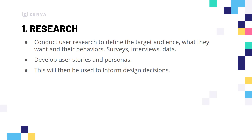This is going to involve conducting user research to define the target audience, what they want, and how they behave generally when using similar apps. You can do this through conducting surveys, interviews, or gathering data. This is also the step where you're going to develop your user stories and user personas so that you can have much finer control over who is going to be using this UI, so that when you start developing, the design decisions are going to be informed based off that.